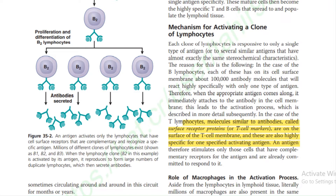Mechanism of activating a clone of lymphocytes: T lymphocyte molecules similar to antibodies, called surface receptor proteins or T cell markers, are on the surface of the T cell membrane and are highly specific for one specific activating agent — an antigen. Therefore, an antigen stimulates only those cells that have complementary receptors and are already committed to respond to it.